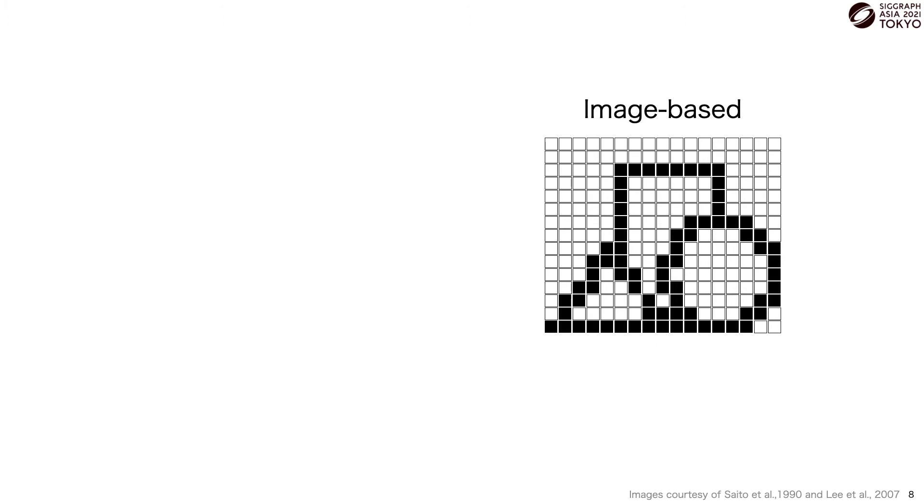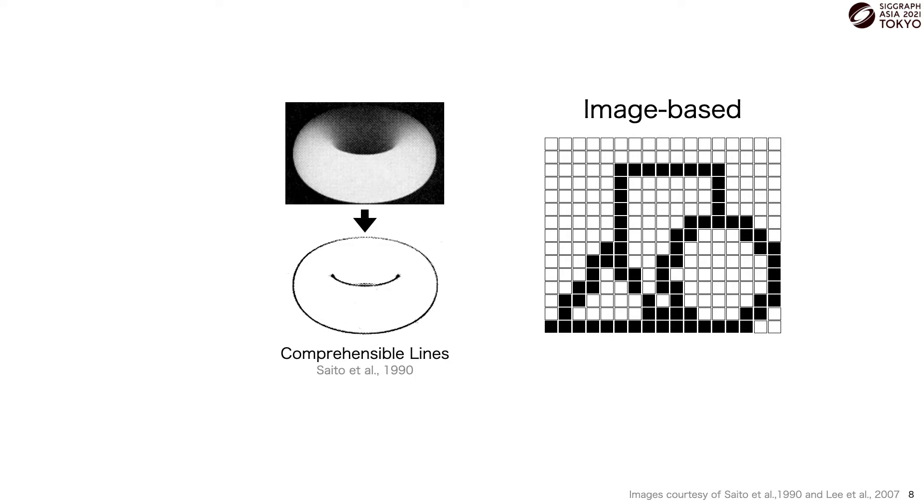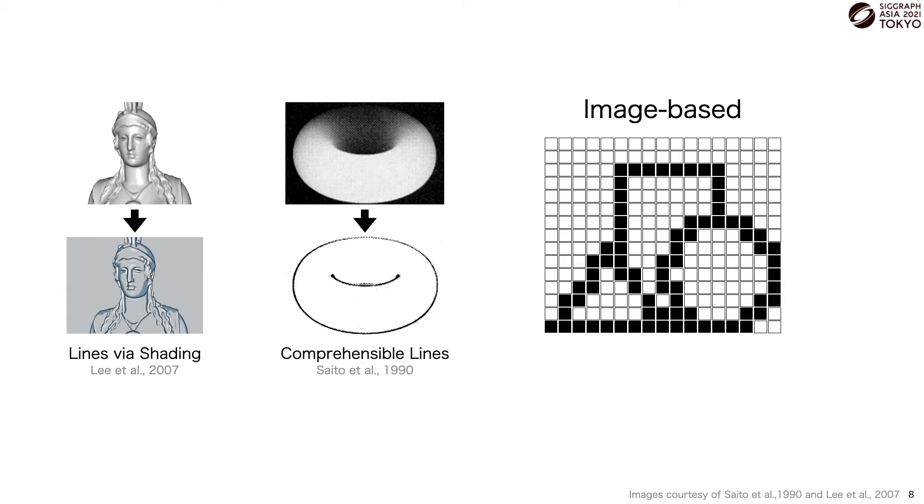On the other hand, image-based methods process an input image or screen buffer and produce an output line rendering, like in Saito and Takahashi's Comprehensible Rendering, where they compute derivatives on image buffers, and Lee and colleagues' lines via abstracted shading, where they process a fully shaded render to produce a line rendering. The render quality of these methods is limited by the resolution of the input images, but as they scale with resolution and not geometric complexity, they're very fast for large scenes.